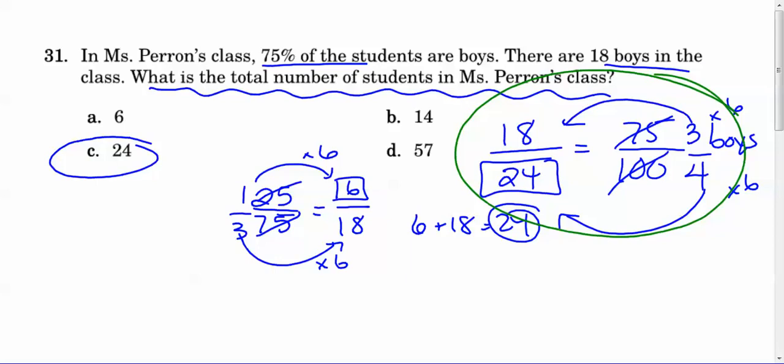And that top number represents the boys. So we know that 18 is the number of boys. So we put that across from the 75%. That also represents boys. And then the bottom number is the whole amount. So we put that across from the 100. And that's what our missing piece was. When you go from three to 18, you got to multiply by six. So four times six is 24 total kids. And that's how we got choice C.